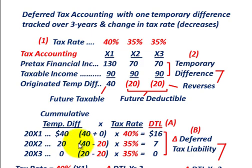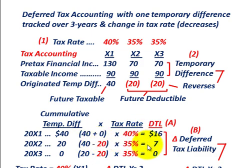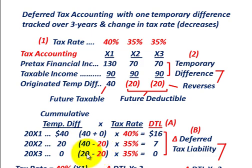For year X2, our cumulative temporary difference moves down to $20,000 — we take the beginning amount of $40,000 and reduce it by the $20,000 reversal, giving a cumulative temporary difference of $20,000. Times the new tax rate of 35%, that gives a deferred tax liability of $7,000. For year X3, the cumulative temporary difference goes to zero — we subtract $20,000 from $20,000 — so the total originated in year X1 reverses out completely to zero by year X3.